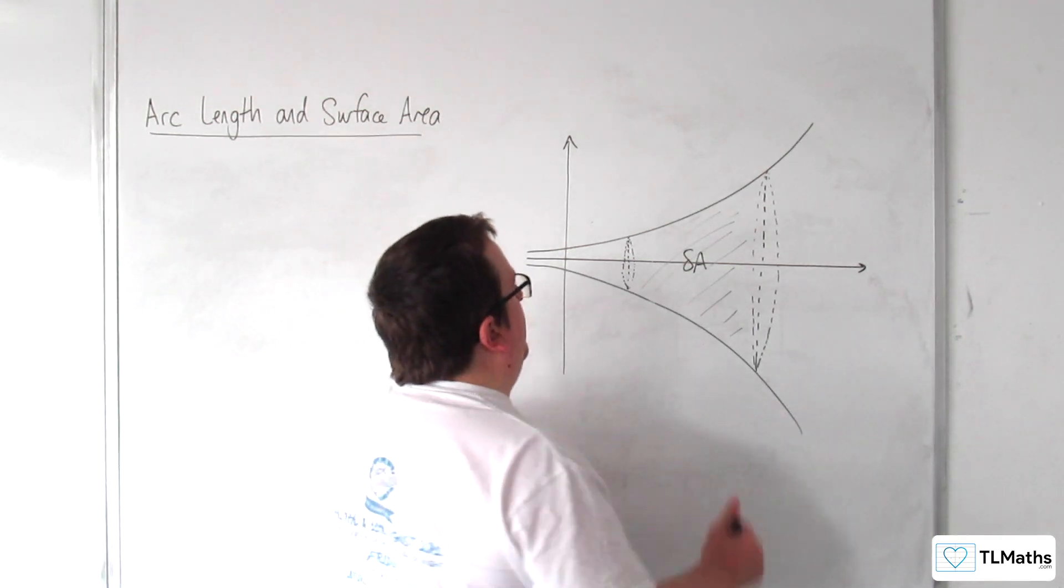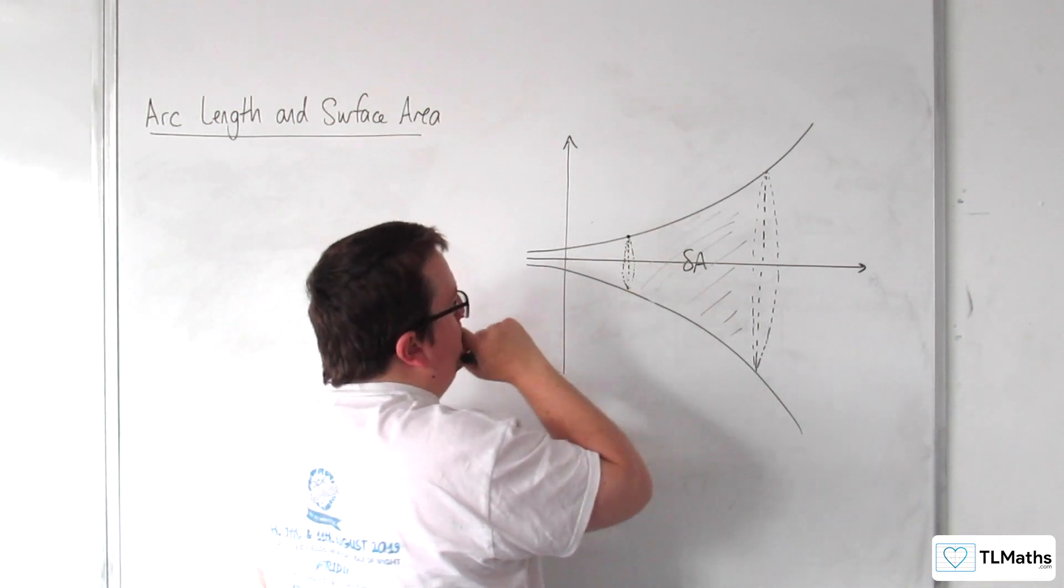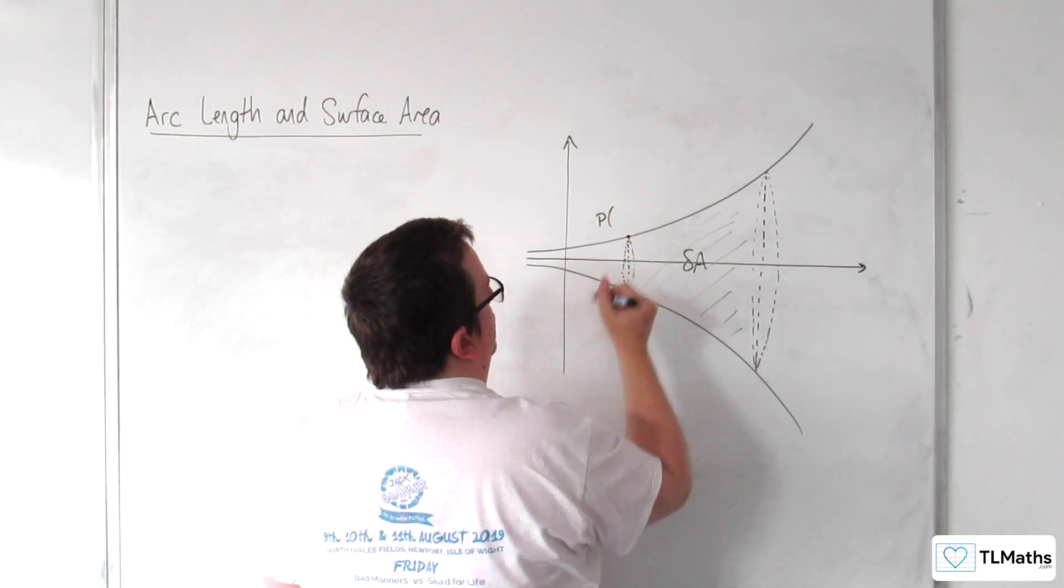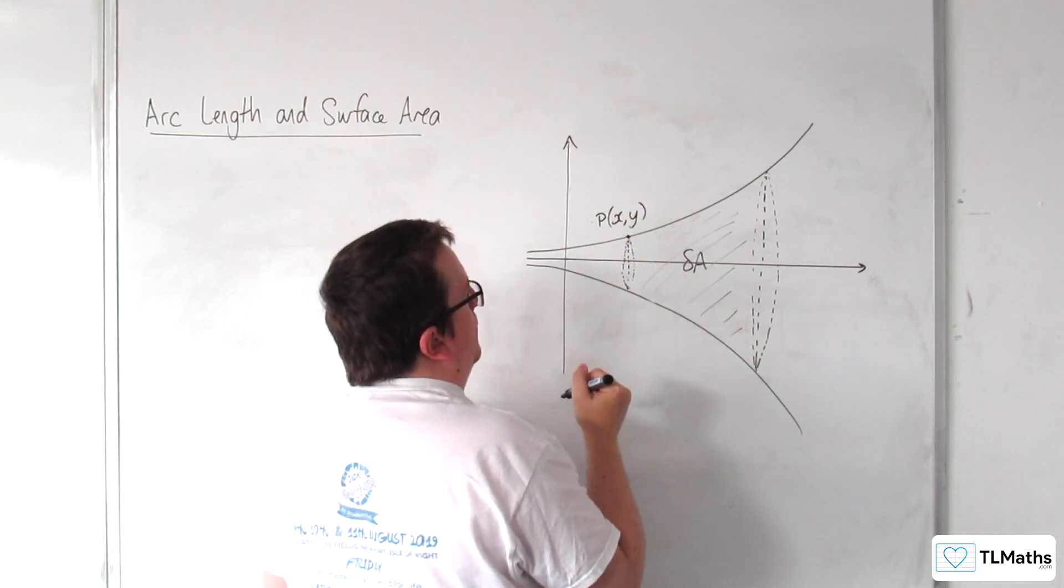So this point here, let's call that the point P, and it's going to have coordinates x, y.